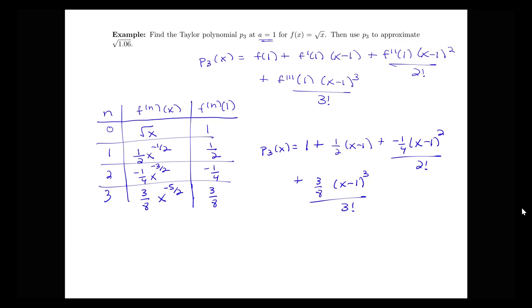That answers the question about what the third order Taylor polynomial is. Now what about doing this approximation? I'm trying to approximate the value of 1.06, and notice that that's equal to the function here with 1.06 plugged in for x. I want to approximate this using this polynomial.